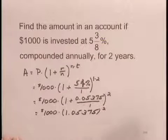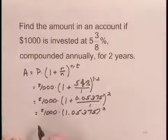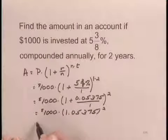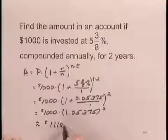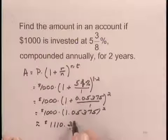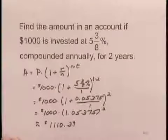And we could go ahead and square this out or we would probably just do this whole computation on a calculator and go to the end result. And we see that we have $1,110.39 after the computation is performed. So this is the amount in the account after two years.